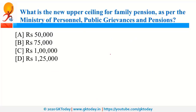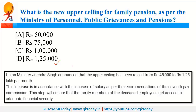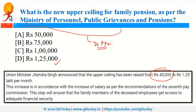The Ministry of Personnel, Public Grievances and Pensions has revised the upper limit for family pension to 1,25,000 rupees, previously it was 4,500 rupees. This ministry has a Department of Pension and Pensioners' Welfare under it, and the present minister is Dr. Jitendra Singh.